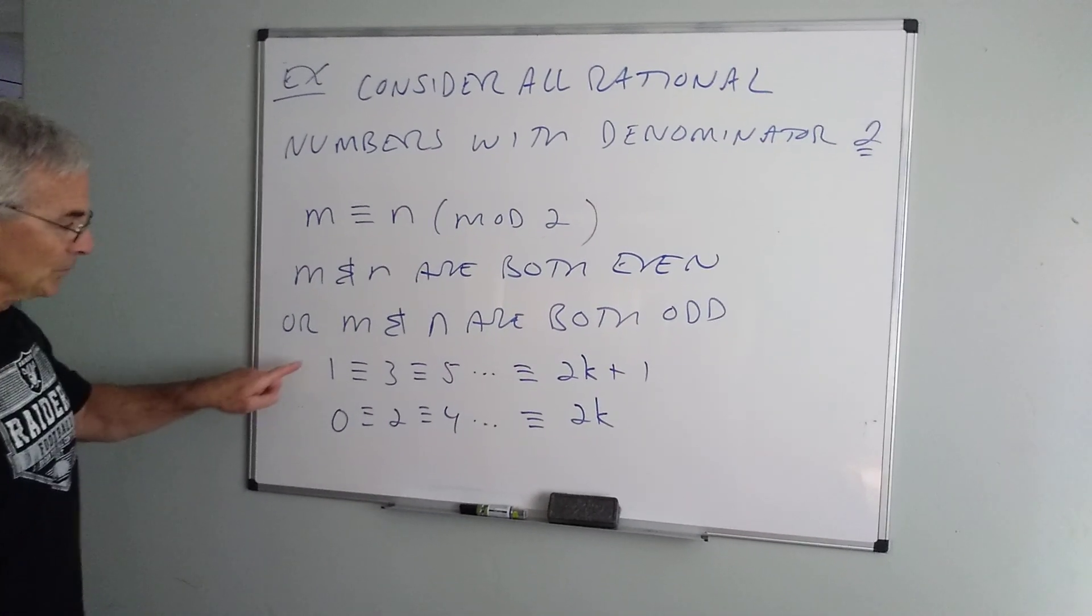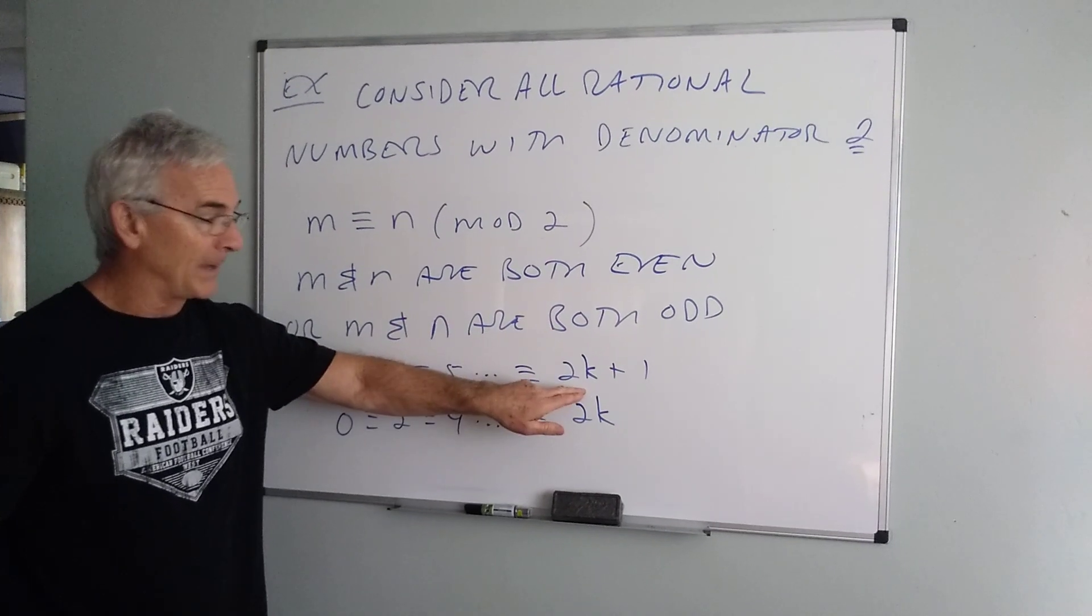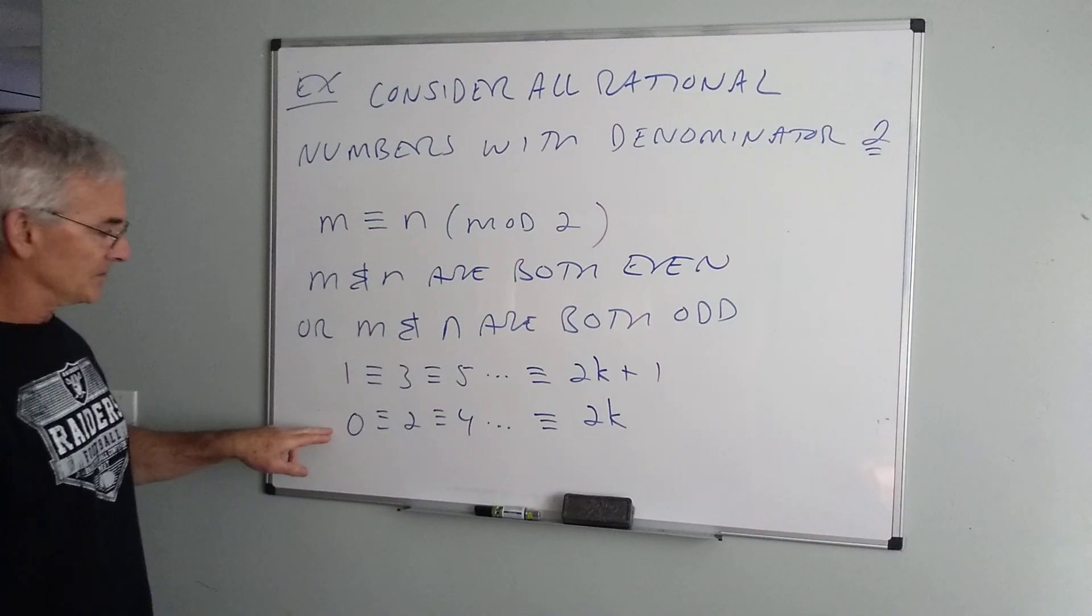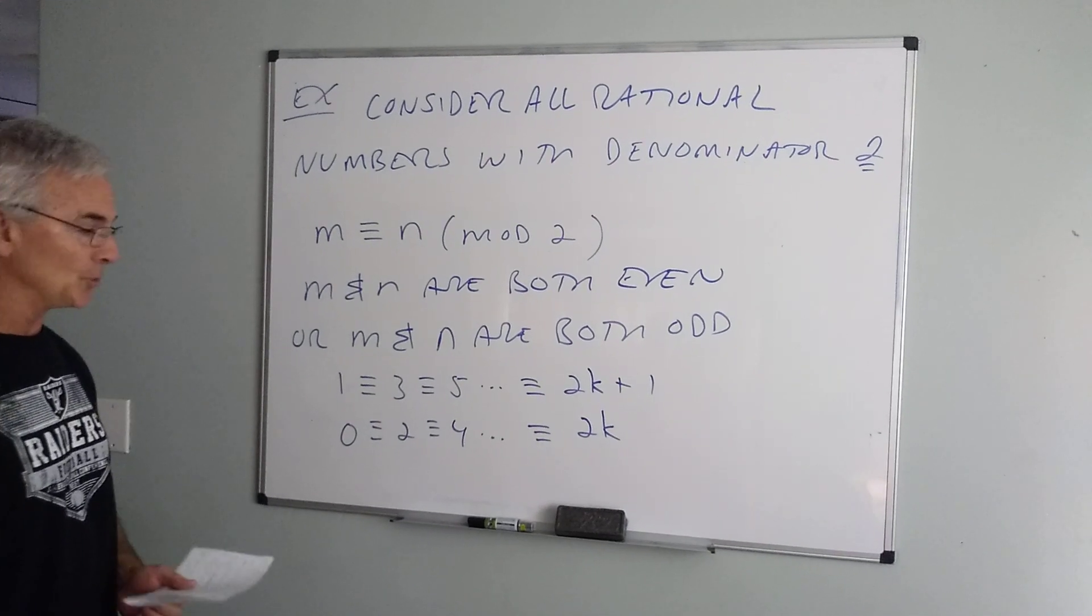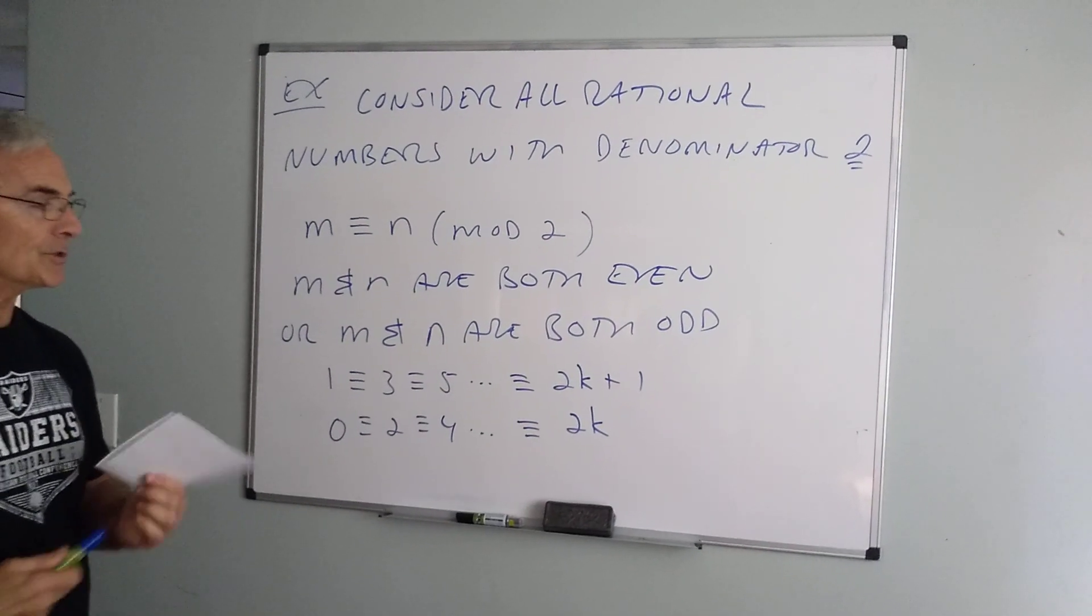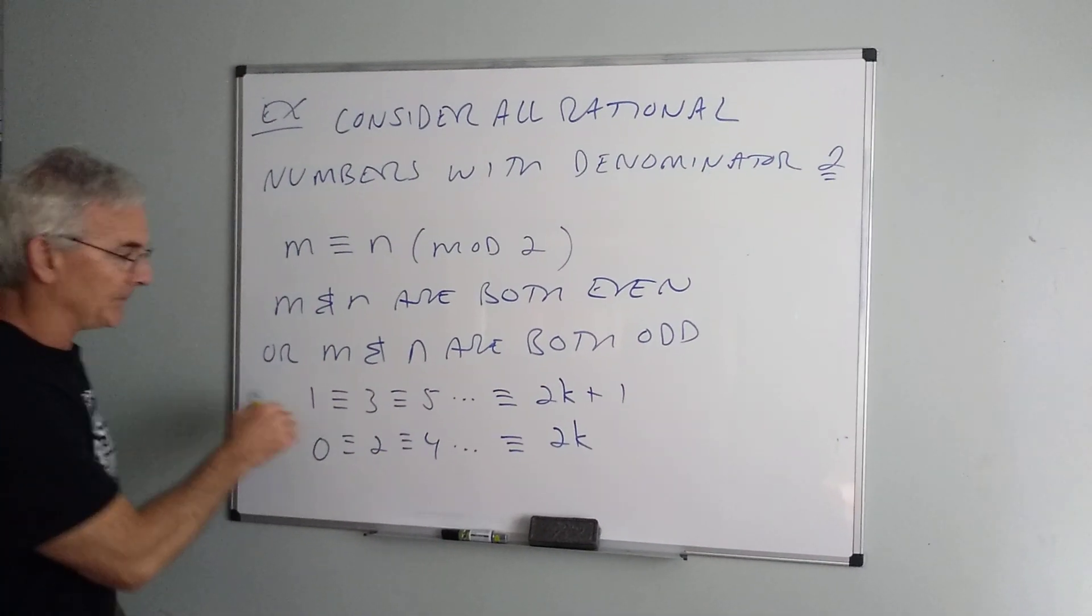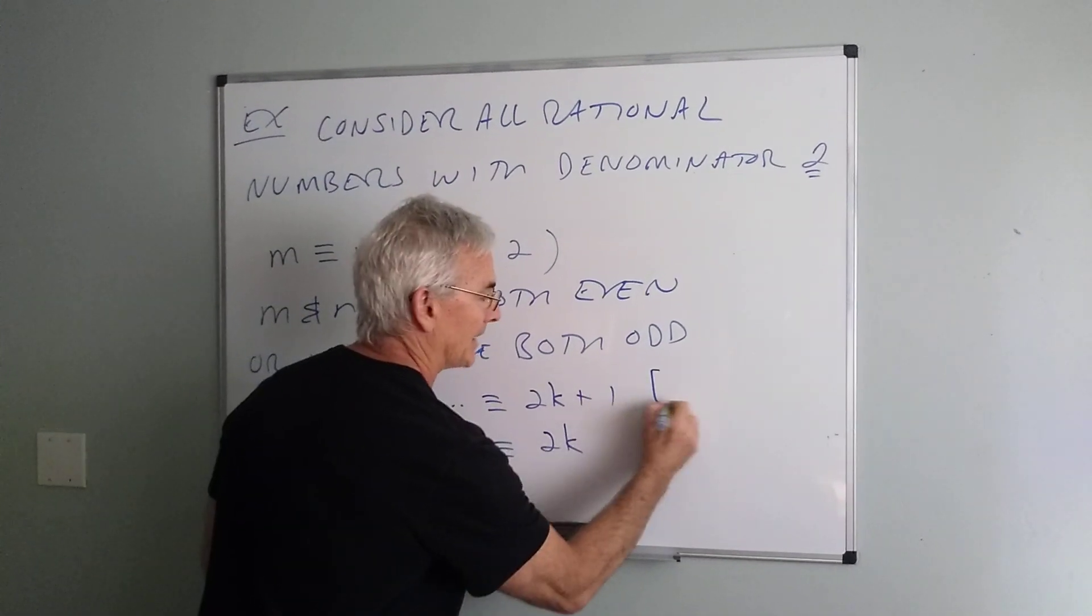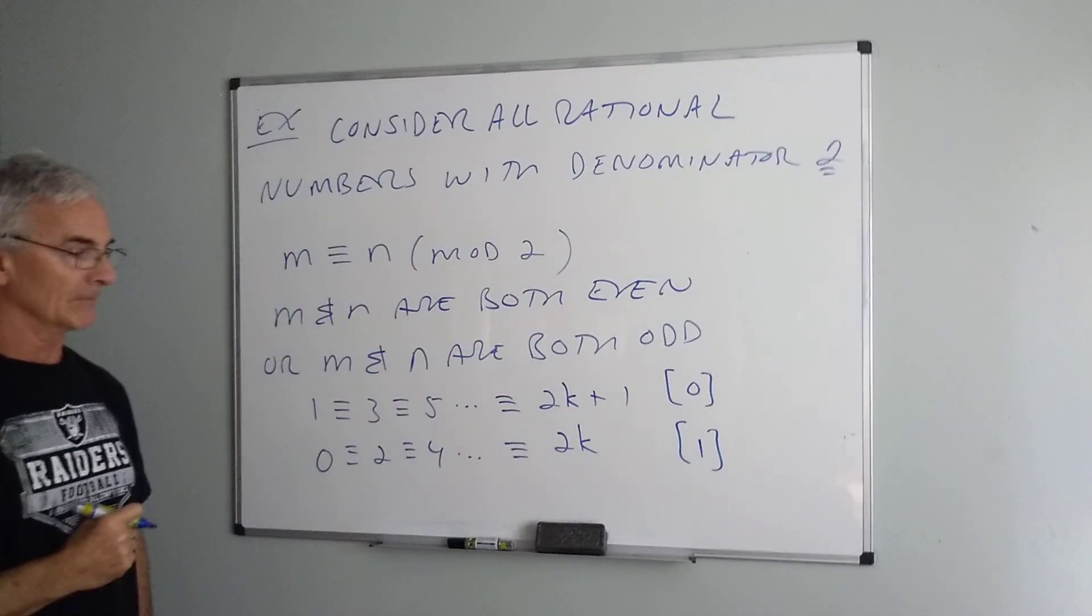So one equivalence class will look like this. One is equivalent to 3, 5 and so on, or basically all the odd numbers. 0, 2, 4 and so on, all the even numbers. So we have exactly two equivalence classes. We usually like to describe the equivalence class as the smallest non-negative integer. So we would call this class 0 and this class 1. Okay?